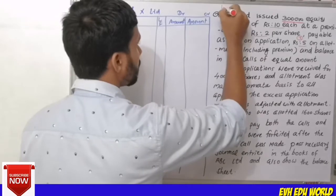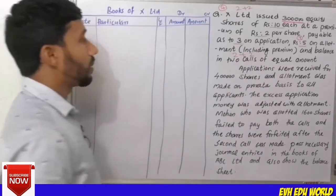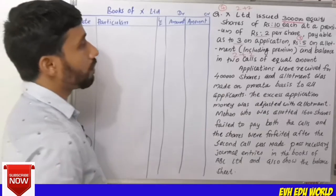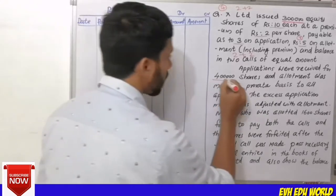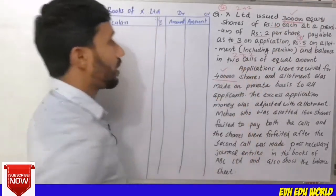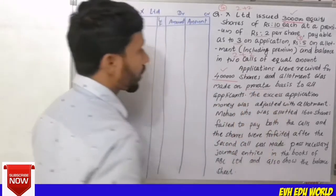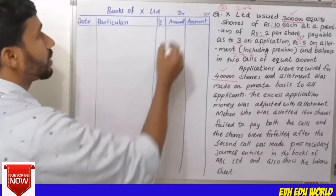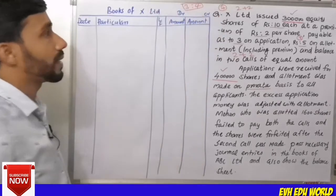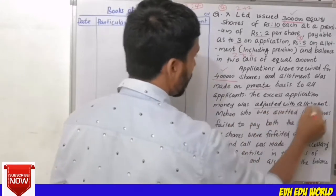Applications were received for 4 lakh shares, but only 3 lakh were issued. Allotment was made on pro-rata basis — that is, 3 is to 4. So for every 4 shares applied, 3 shares were allotted. The excess application money was adjusted with the allotment.